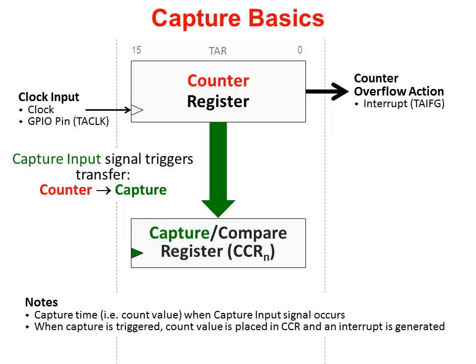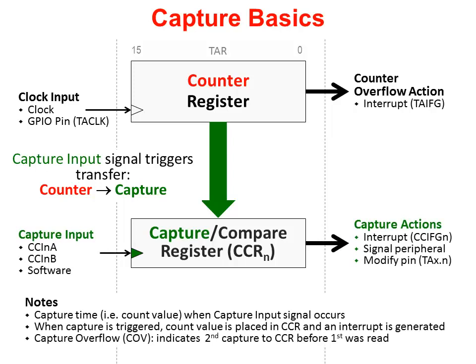The top part of the diagram hasn't changed — the timer counter features are just the same as before. But when a capture is triggered, it's going to copy the value out of the counter register into the CCR register, also known as the capture and compare register. The capture input can be connected to a couple of different signals — CCNA or CCNB — or triggered via software. The capture input hardware signals CCNA and B are connected differently for each CCR register and device, so you'll need to refer to the data sheet to see what options you have available.